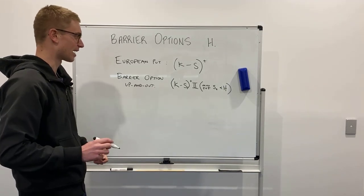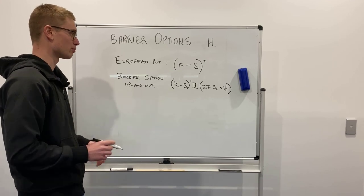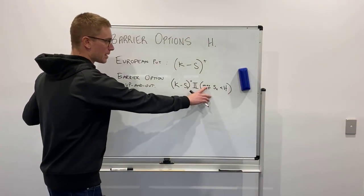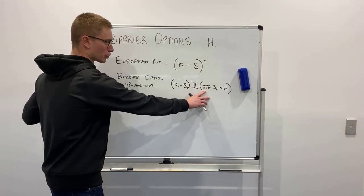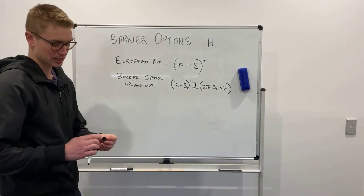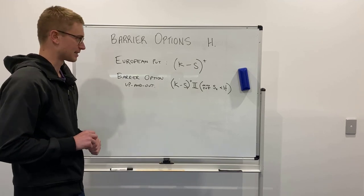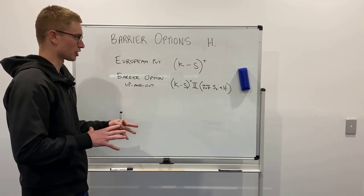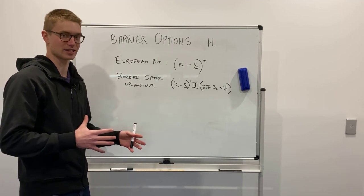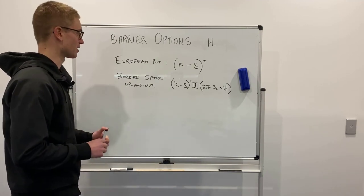For a down-and-out option it would be the same idea but on the put again — you'd check the minimum of S over monitoring dates being greater than H. Let's move into the implications for the tree and what that means for pricing this option using the binomial option pricing model.